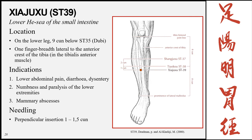Xiajuxu, Stomach 39, is the lower he-sea point of the small intestine, on the lower leg, 9 cun below ST35 — one finger-breadth lateral to the anterior crest of the tibia. Locate the popliteal crease and lateral malleolus, divide in half, then go 1 cun below the midpoint. Indications: lower abdominal pain, diarrhea, or dysentery (related to the small intestine); and locally for numbness, paralysis of the lower extremities, and mammary abscesses. Insertion is perpendicular, 1 to 1.5 cun.